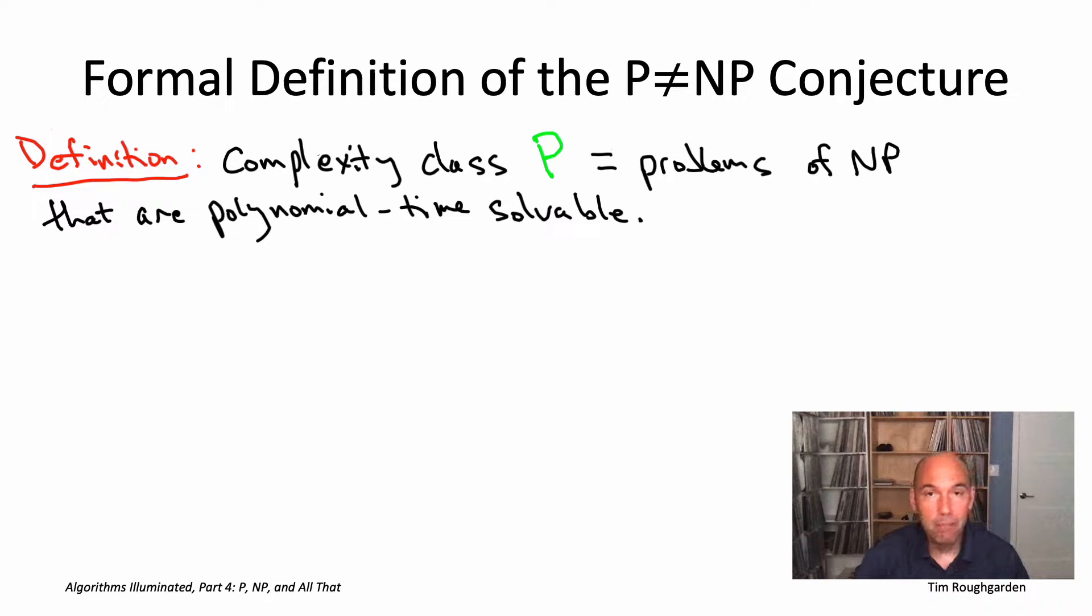We've seen plenty of examples of members of this complexity class P. For example, 2SAT - satisfiability where each constraint is the disjunction of at most two literals - can be solved in polynomial time, even in linear time. One way is by a reduction to computing strongly connected components. Or the minimum spanning tree problem. The search version of MST belongs to this set P.